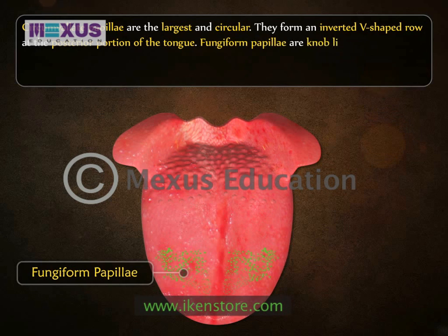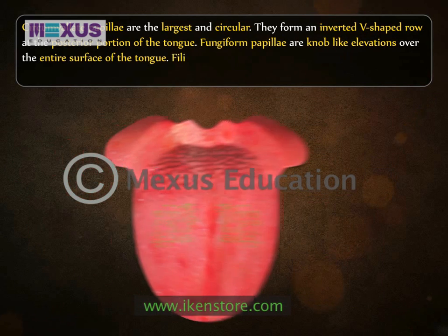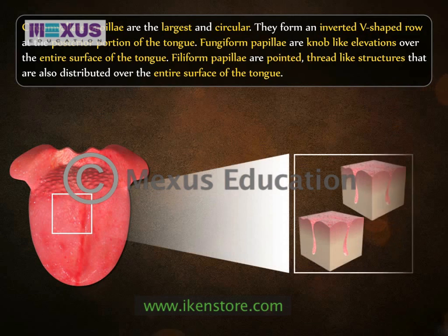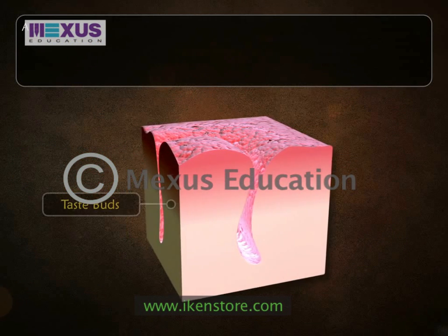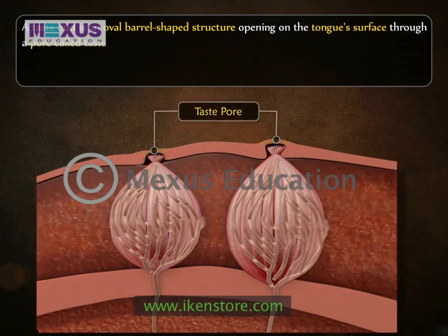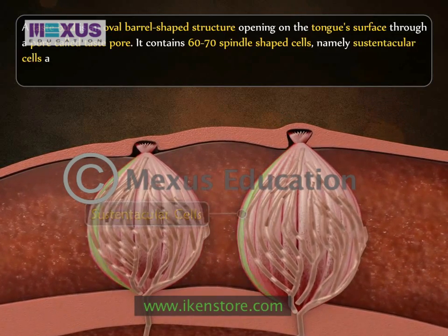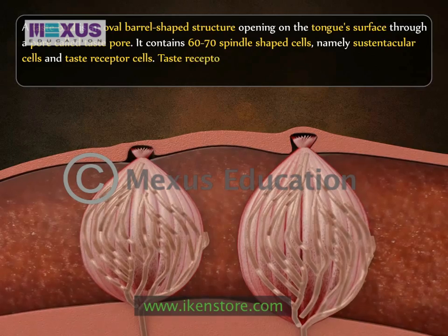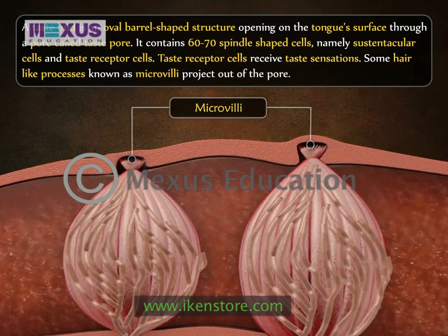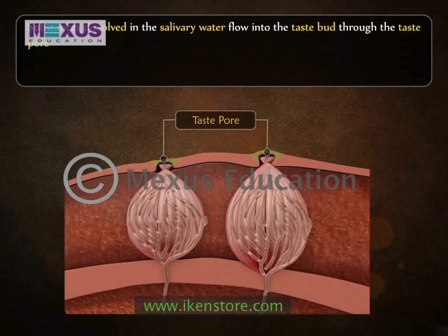Fungiform papillae are knob-like elevations over the entire surface of the tongue and most of them contain taste buds. Filiform papillae are pointed, thread-like structures distributed over the entire surface of the tongue and they rarely contain taste buds. A taste bud is an oval, barrel-shaped structure opening on the tongue's surface through a pore called the taste pore. It contains 60 to 70 spindle-shaped cells, namely sustentacular cells and taste receptor cells. Taste receptor cells receive taste sensations, and some hair-like processes known as microvilli project out of the pore.